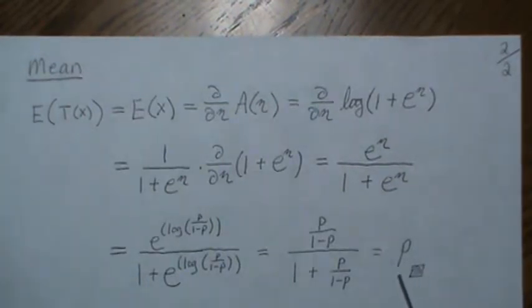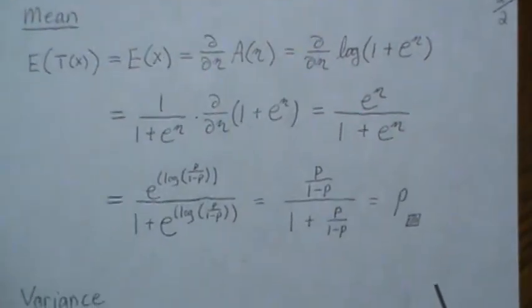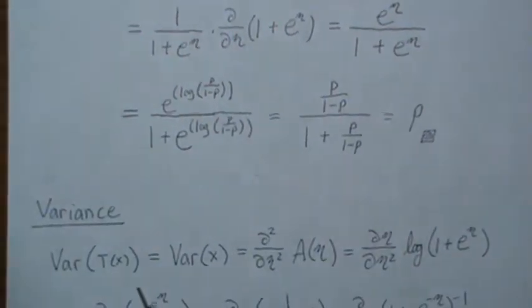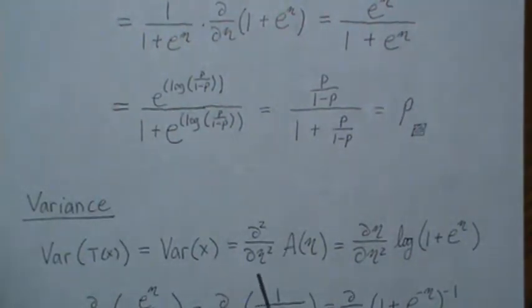Now to find the variance of the sufficient statistic, which is x in this case, it's the second derivative of the log partition.